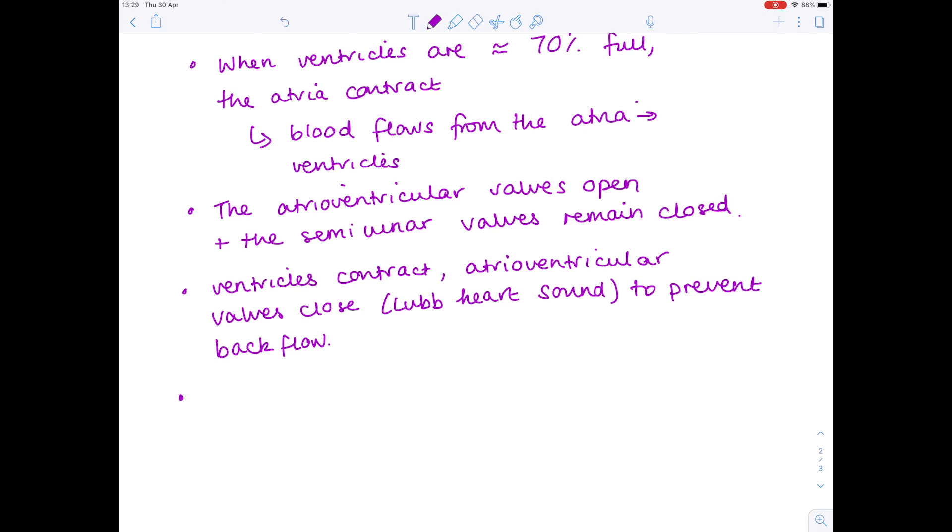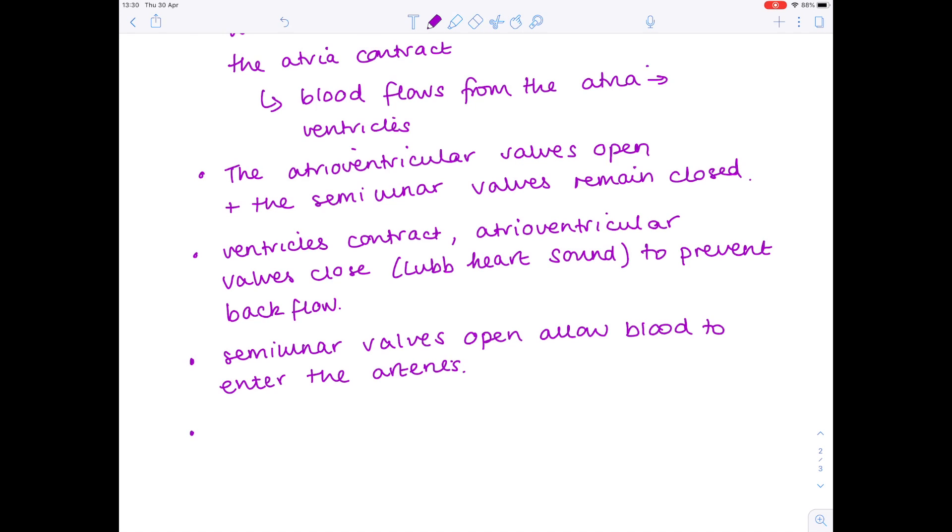That blood needs to go somewhere, so at this point the semilunar valves open, allowing the blood to flow from the ventricles into the arteries, either the pulmonary artery or the aorta. And at the same time, we need our heart to obviously constantly fill with blood, so the atria start to refill. And remember, their blood comes from the veins.